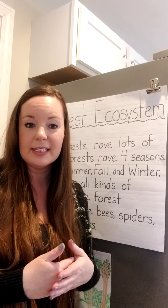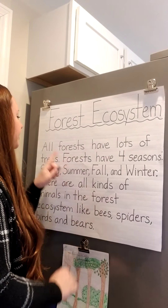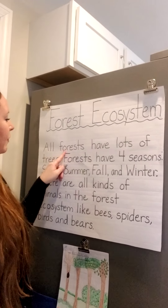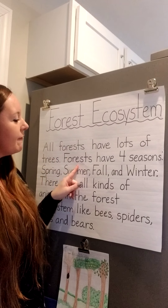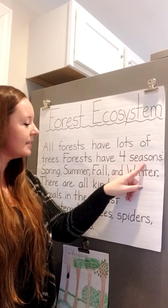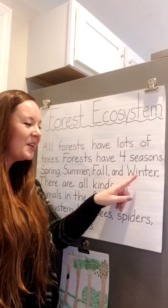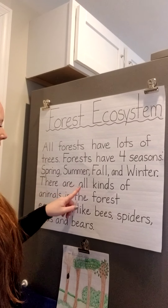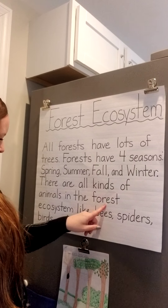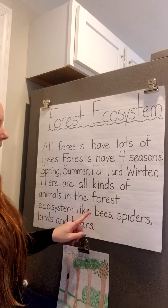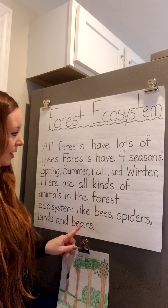I've already written the forest ecosystem chart here for you, so I'd like to read it together. All forests have lots of trees. Forests have four seasons: spring, summer, fall, and winter. There are all kinds of animals in the forest ecosystem like bees, spiders, birds, and bears.